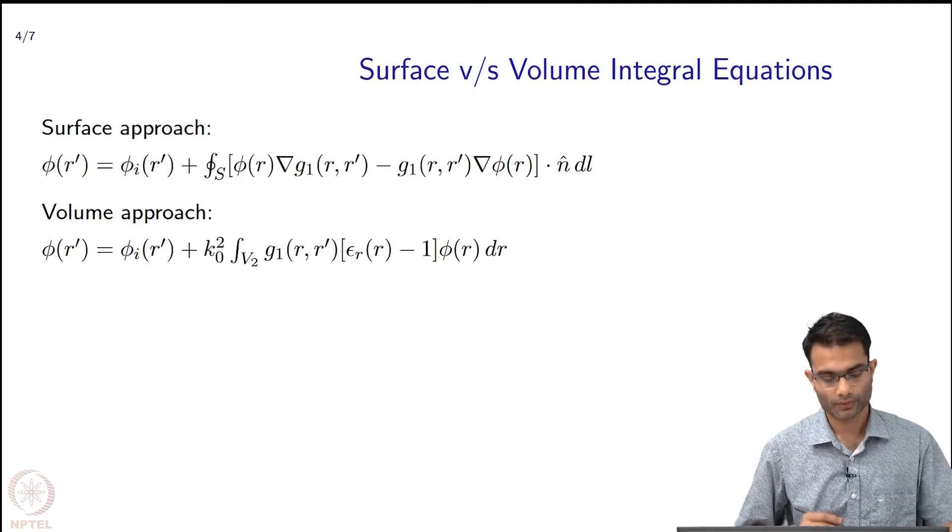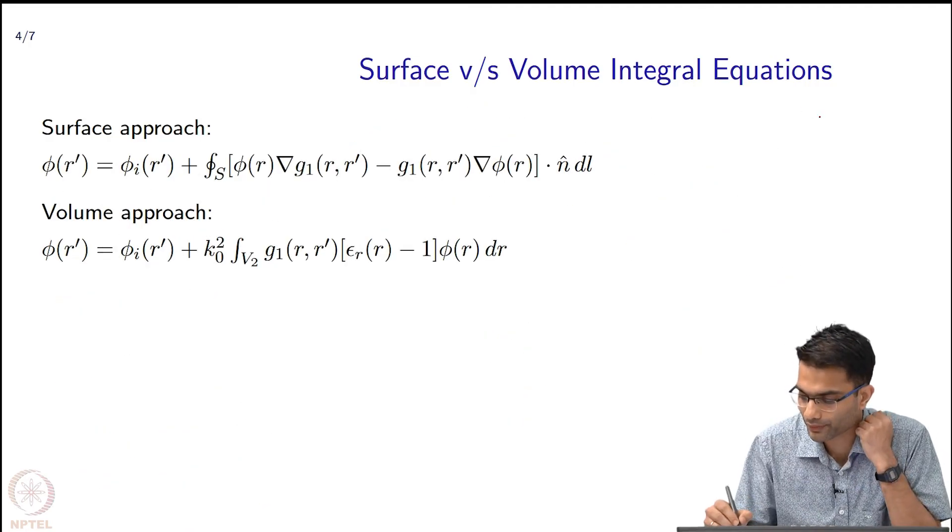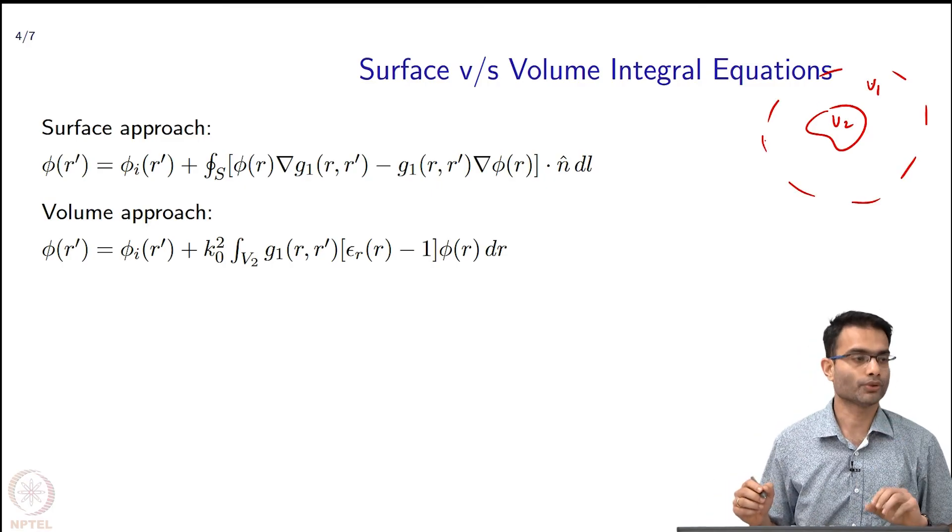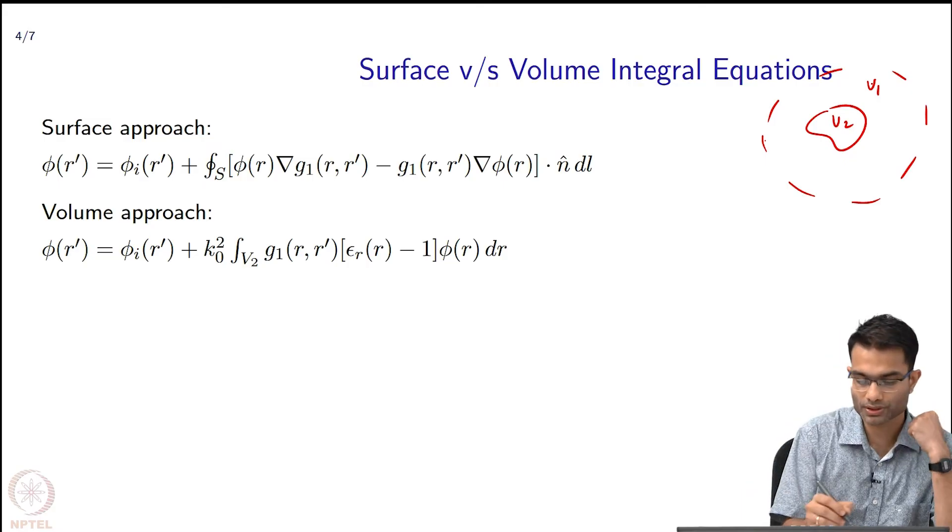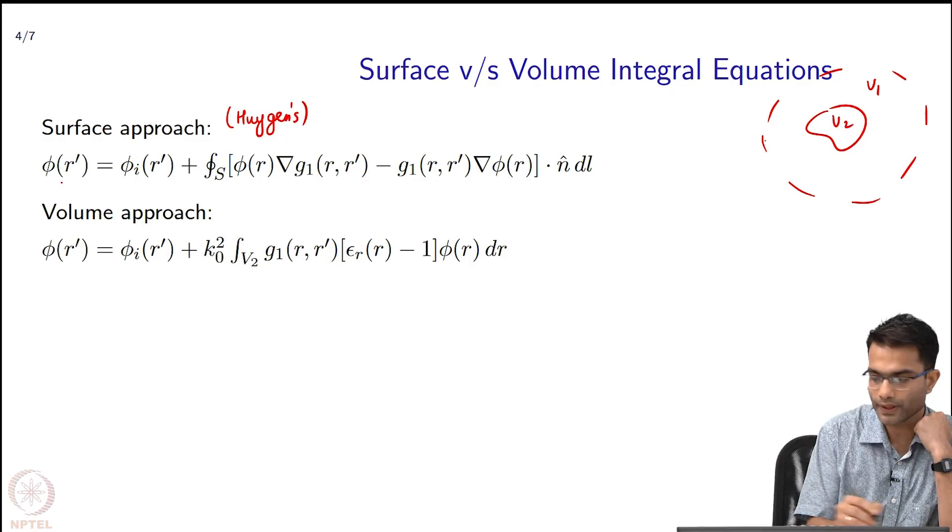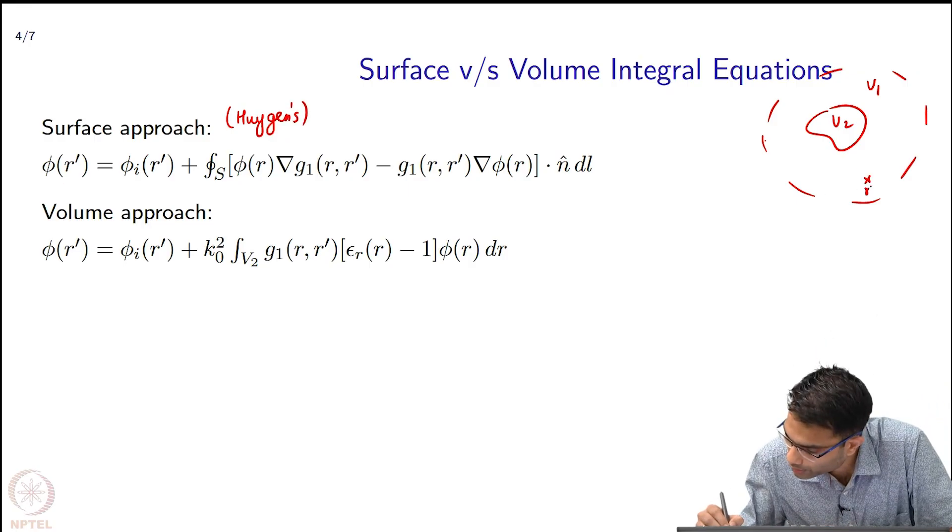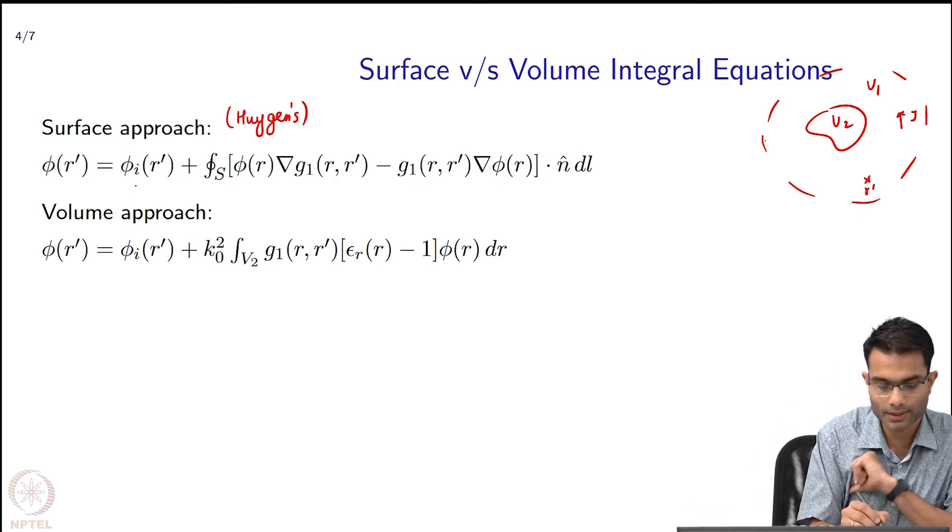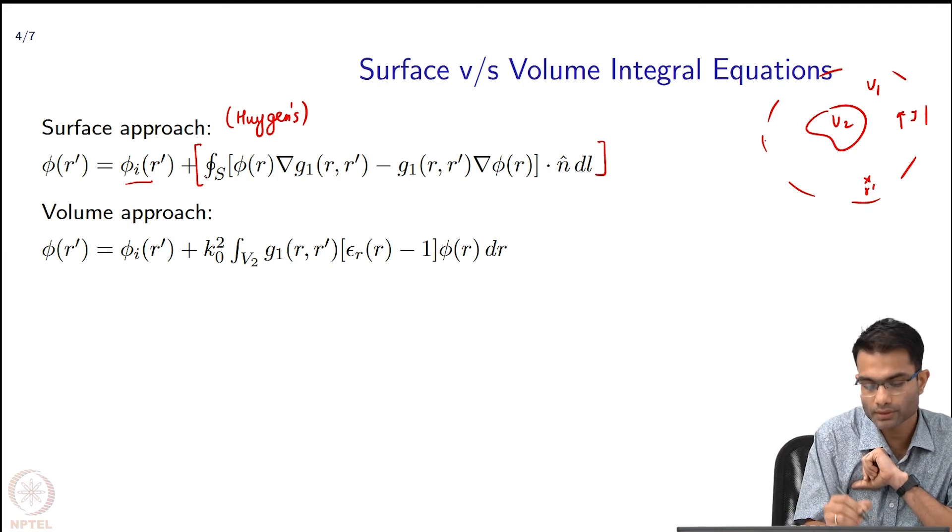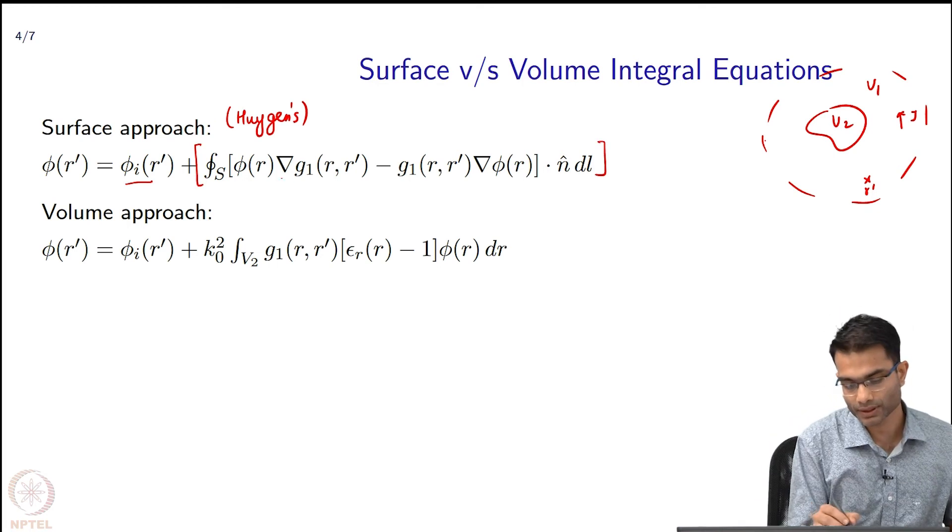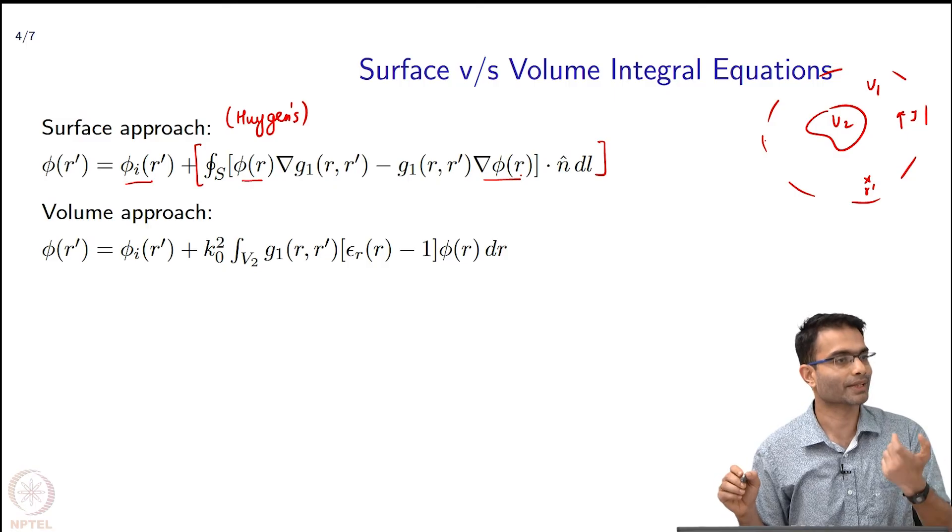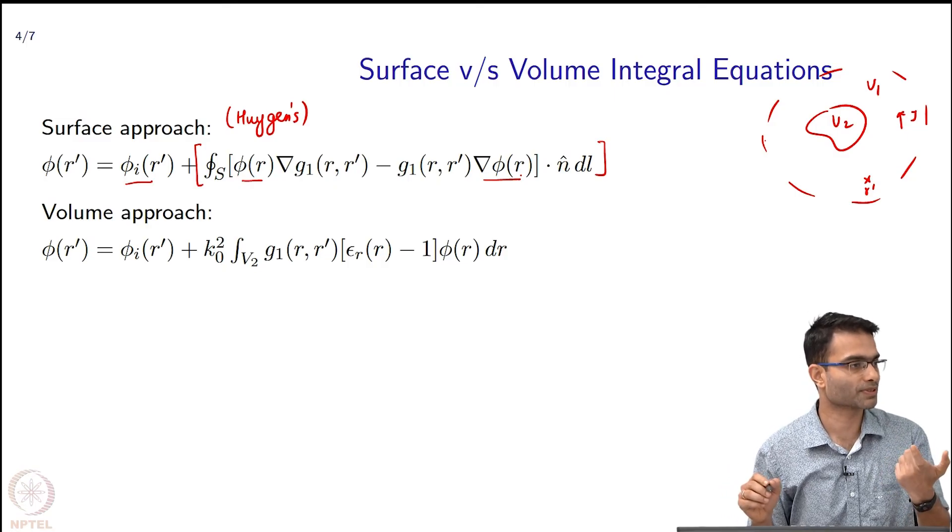The differences do not end here. When I want to find out the field far away, I use in the surface integral approach this is called my Huygens principle. The field at some point over here r' is written as a sum of the incident field and this term over here which is a surface integral again, and that surface integral includes φ and ∇φ which are Eₜₐₙ, Hₜₐₙ on the surface. These are my secondary sources in my Huygens principle.